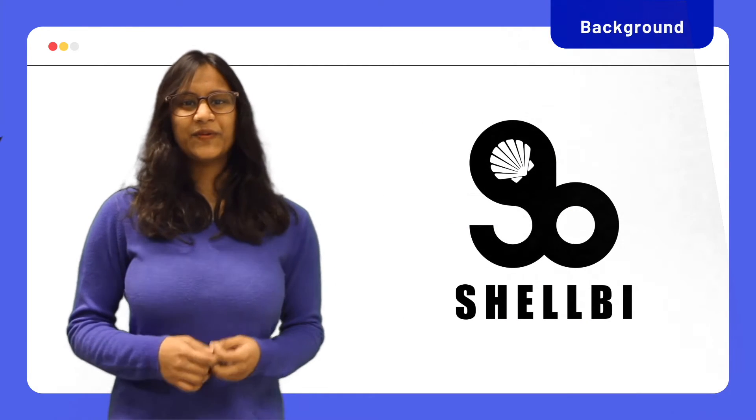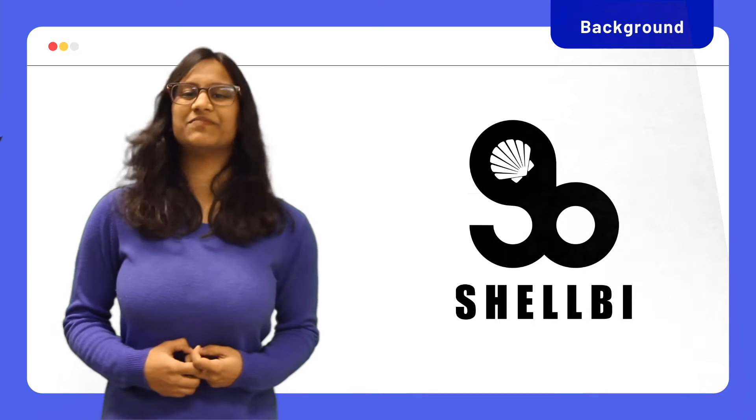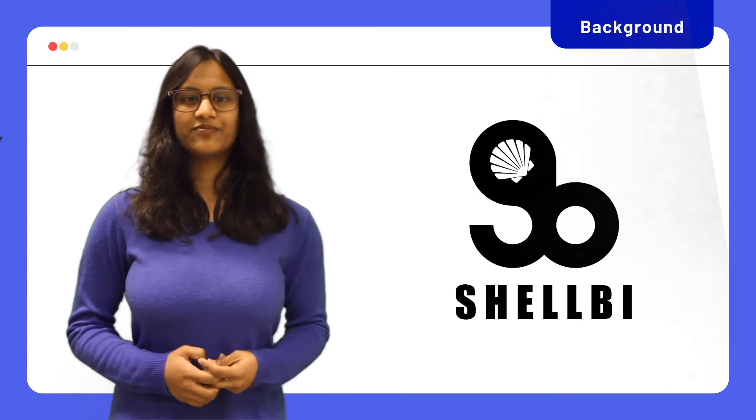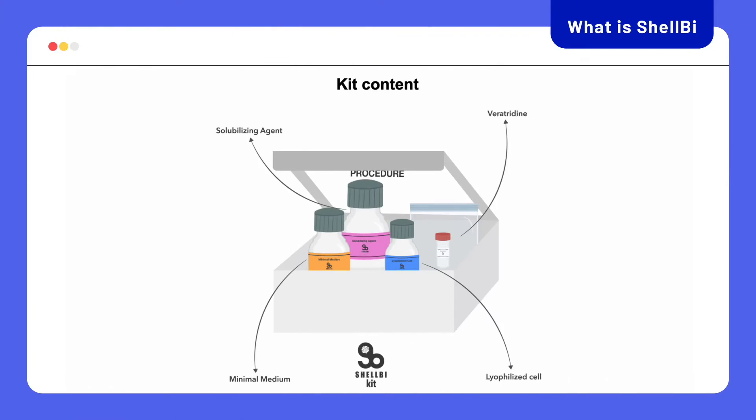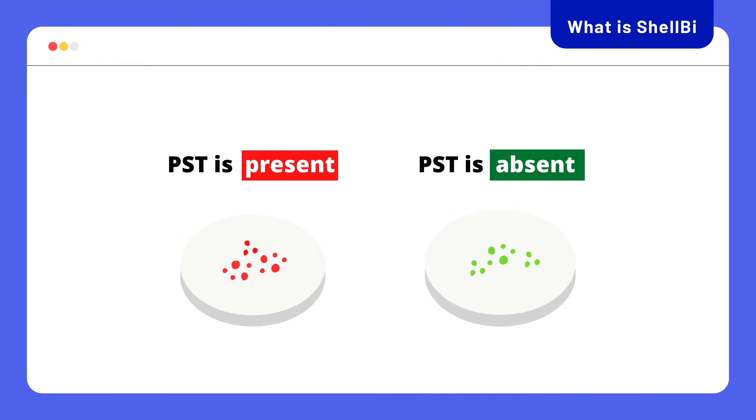We came up with Shelby, a prokaryotic biosensor for the detection of paralytic shellfish toxins. Distributed as a kit with a set of protocols, the biosensor would glow red in the presence of toxins and glow green in their absence.